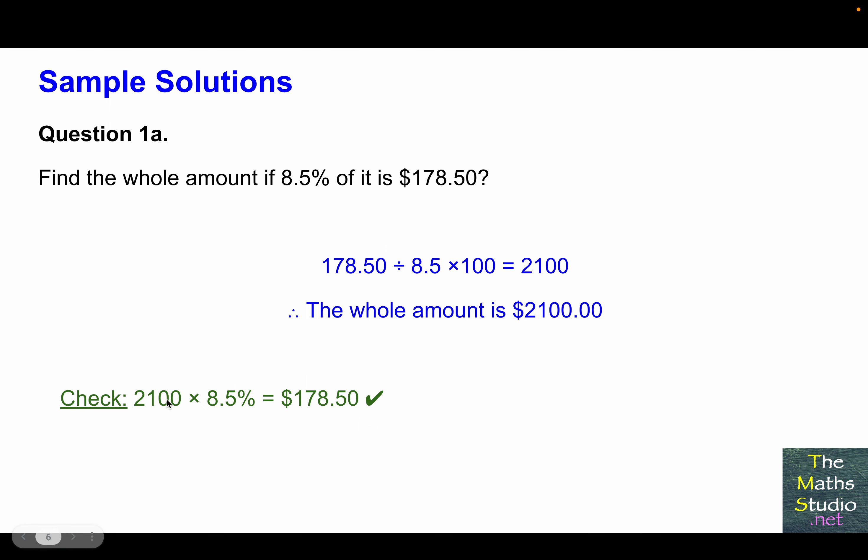And as a double check, 8.5% of $2,100. So $2,100 times 8.5% is equal to $178.50.